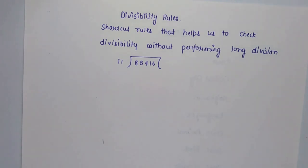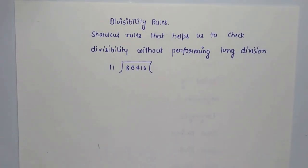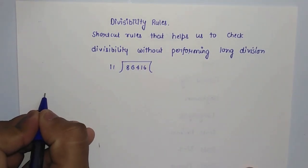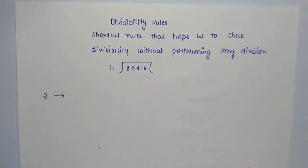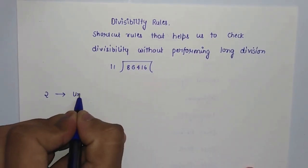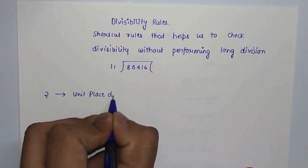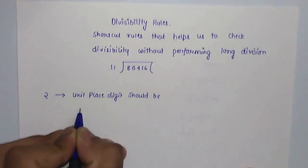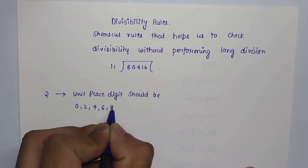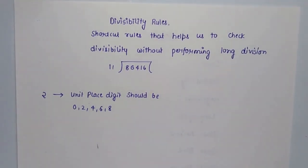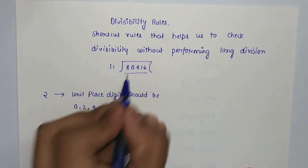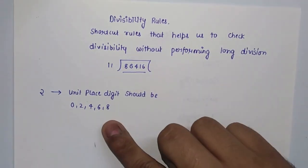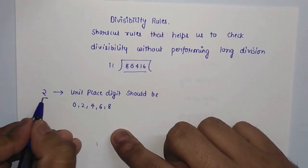Now let's check divisibility rules for different numbers. The divisibility rule for 2 is that the unit place digit of the given number should be 0, 2, 4, 6, or 8. For example, take the number 86,416 — since the unit place digit is 6, we can say the number is divisible by 2.